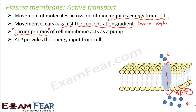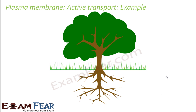Why do we need active transport at all? Why move molecules from lower concentration to higher concentration? Consider a plant's basic needs — sunlight, water, minerals. When we water a plant, we put water in the soil, and the roots are in contact with the soil.